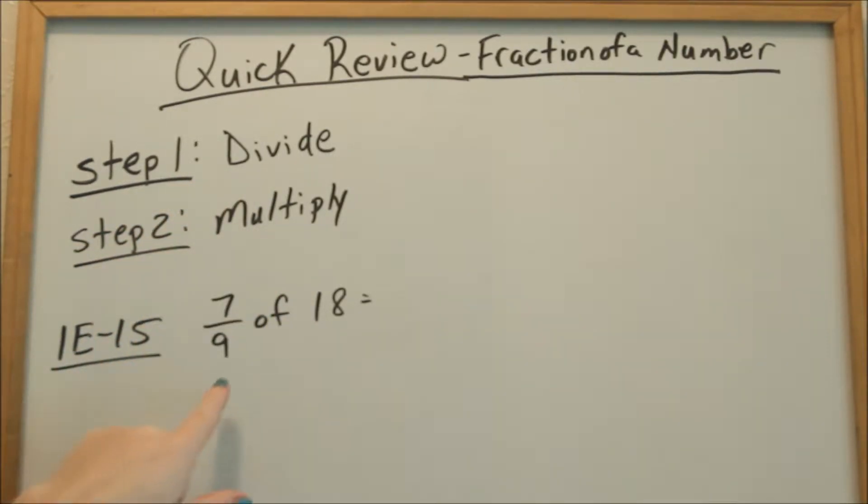What does fraction of a number look like? It looks like this. Seven ninths of 18. Okay, I'm going to prove to you why we divide first. So we're looking at 1E15. So seven ninths of 18.